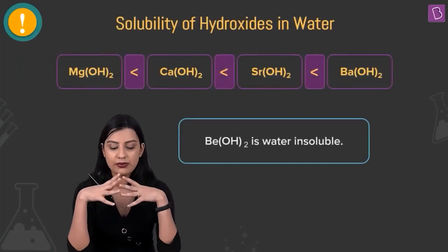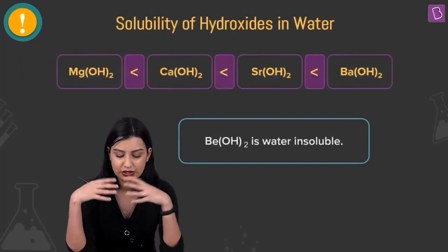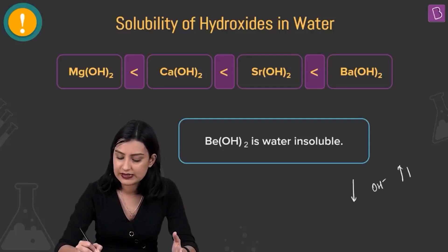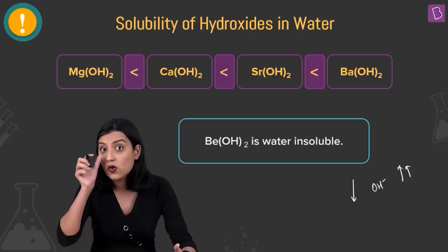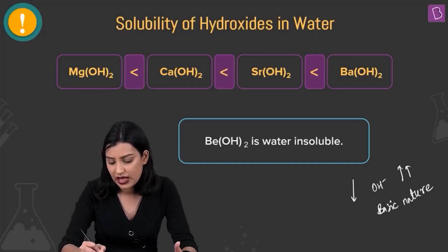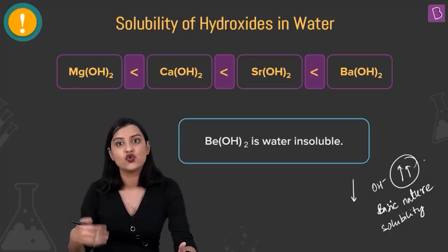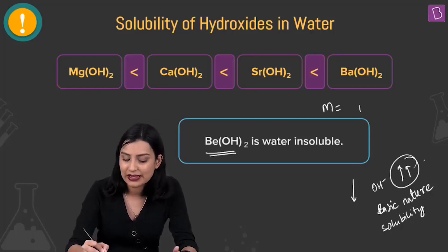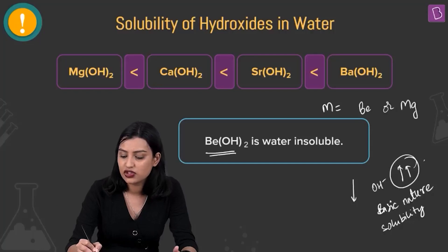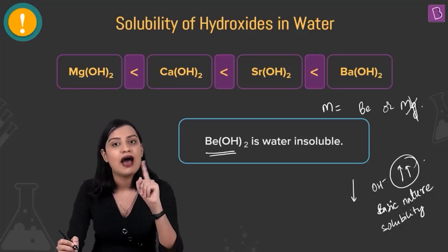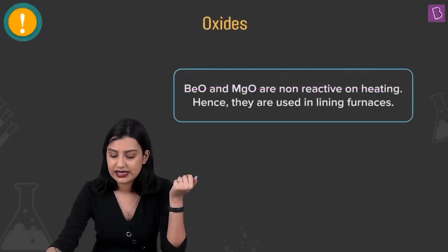Next, they're talking about the solubility of hydroxides. As you go down the group, both the solubility of hydroxides and their basic nature increase. The question says the hydroxide is insoluble in water. Beryllium hydroxide is water-insoluble, so magnesium is eliminated — M has to be beryllium.